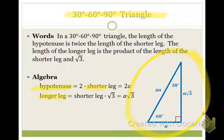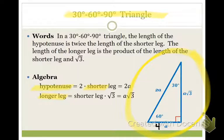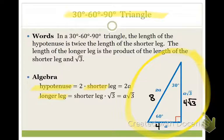Let's give some values. If A is 4, the hypotenuse is double A — so 2 times 4, which is 8. The hypotenuse is twice the short leg. And for the long leg, it's the short leg times the square root of 3. Do you see how they relate? Hypotenuse is twice the short leg, and the long leg is the short leg times the square root of 3.